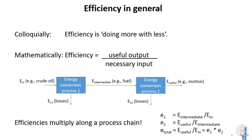In general, we define efficiency as doing more with less. In mathematical terms, efficiency is defined as useful output divided by necessary input. Two example processes are given — conversion process one and conversion process two — each with its own efficiency. E1 is defined as E-intermediate divided by the incoming energy E-in, and the conversion efficiency of the second process is E-useful divided by E-intermediate. The major observation is that in a process chain, the efficiencies multiply.